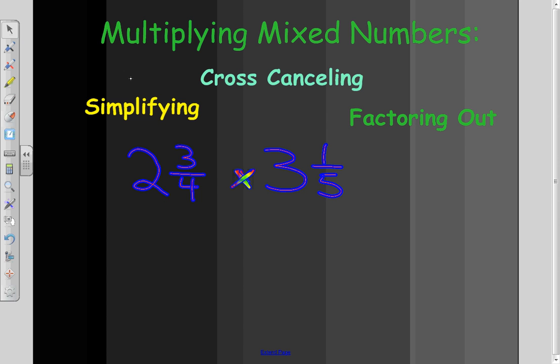Okay folks, today we're going to take a look at multiplying mixed numbers. These special problems involve simplifying, cross-canceling, and or factoring out.